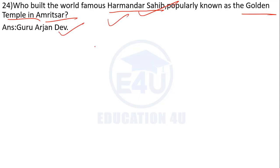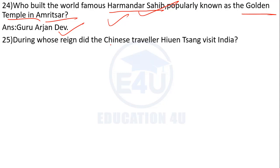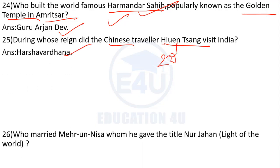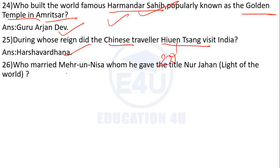During whose reign did the Chinese traveler Yuan Zang visit India? Yuan Zang visited India during the reign of Harsha. The title Noor Jahan means Light of the World.